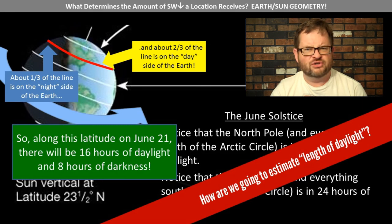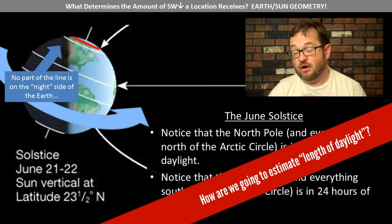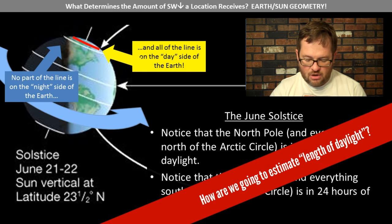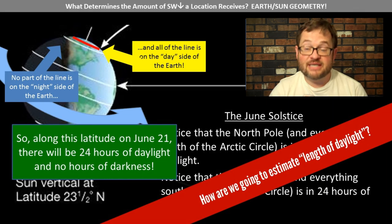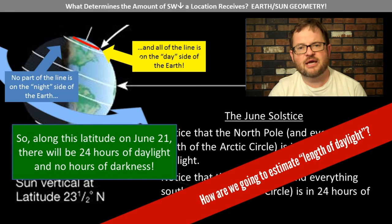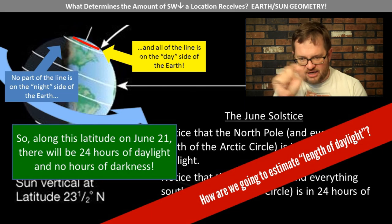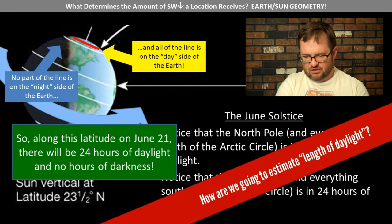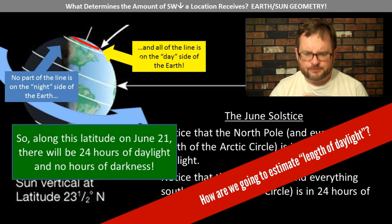If we pick a location even farther north — say 80 degrees north, north of the Arctic Circle — no part of that latitude line is on the dark side of the Earth, and all of it is on the daylight side. At 80 degrees north on June 21st, there will be 24 hours of sunlight; the sun will never set. In the ATS-114 lab, you'll set up a diagram like this, coloring in which side of the globe is in darkness and which is in daylight on your particular day, draw latitude lines, and infer approximately how many hours of daylight and darkness there are.